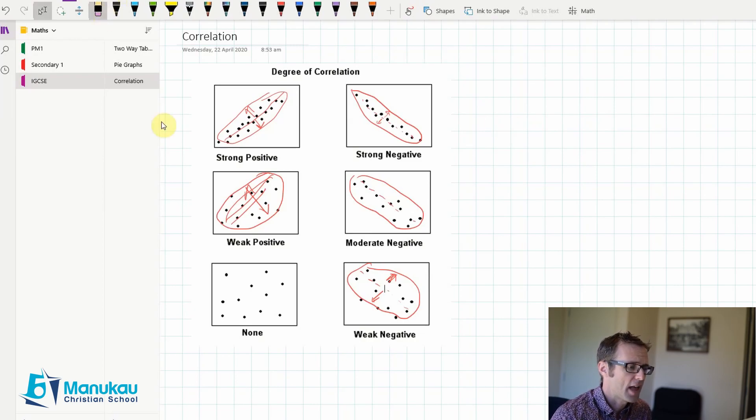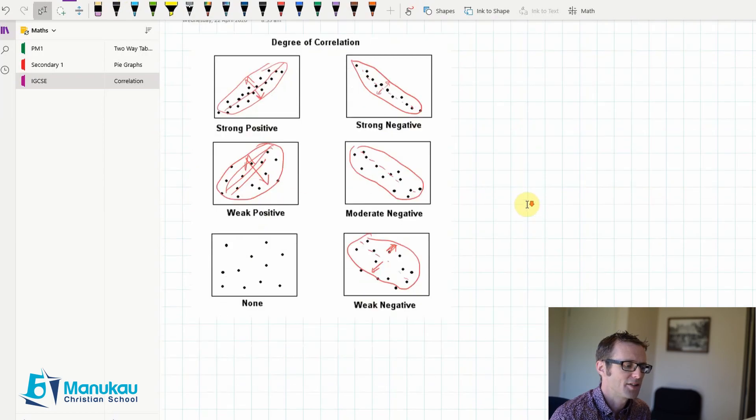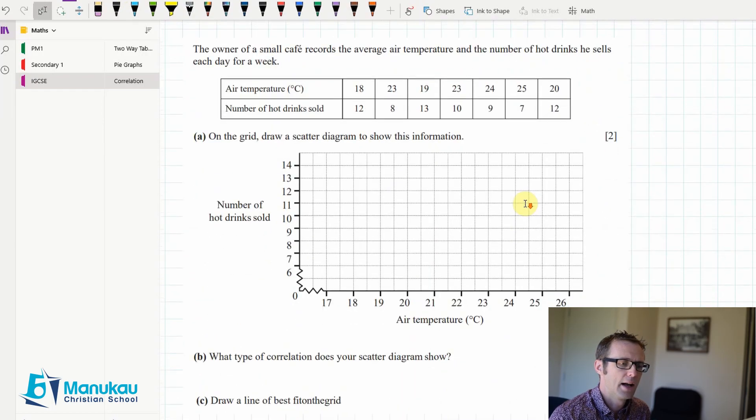Well, that's that. Let's move on to an actual past exam question on this. So, we've got the owner of a small cafe. And this owner is recording the air temperature and the number of hot drinks he sells for each day for a week.